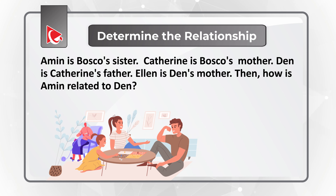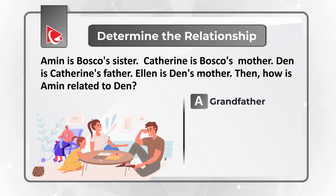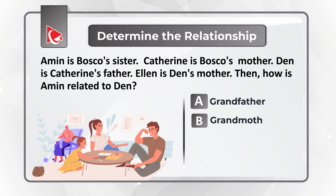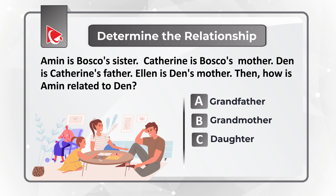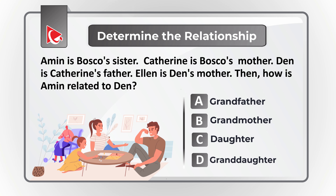You have four different choices: Choice A, Grandfather. Choice B, Grandmother. Choice C, Daughter. And Choice D, Granddaughter.